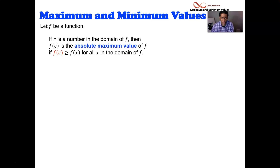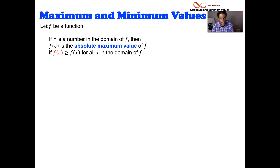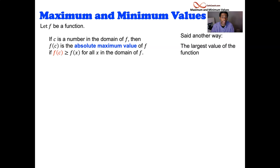First up, we're going to have a function f, and we're going to have the definition of what it means to be the absolute maximum value of the function. It's going to occur at an x value called c, and then you plug that c into the function and you get f of c. The y value is the absolute maximum value if it's bigger than every other y value for all the x's in the domain of the function. The best way to say this is basically it's the biggest the function ever gets.